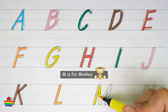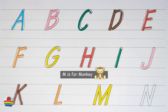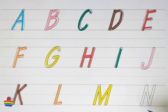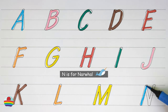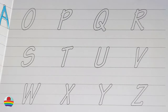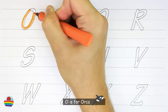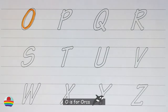M. M is for monkey. M. N. N is for novel. N. O. O is for orca. O.